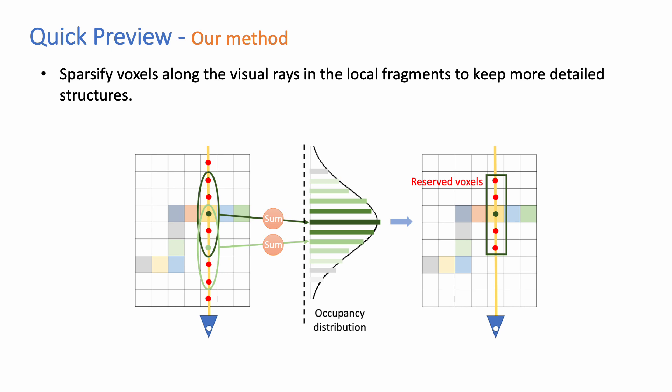For sparsification, we propose to sparsify voxels along the visual rays to keep more detailed structures.